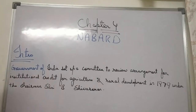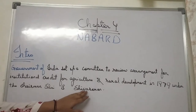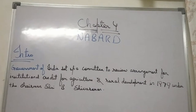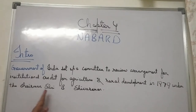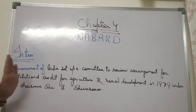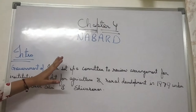The Government of India set up a committee in 1979 to review the arrangement for institutional credit for agriculture and rural development. This committee was chaired by Shri B. Shivaraman. Based on the committee's recommendations, NABARD was established in 1982. The committee decided that institutional credit for agriculture and development should be handled by a dedicated bank.